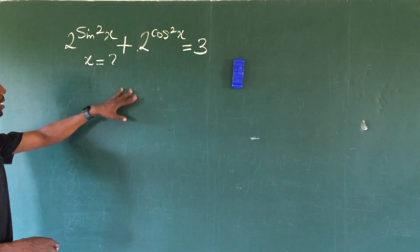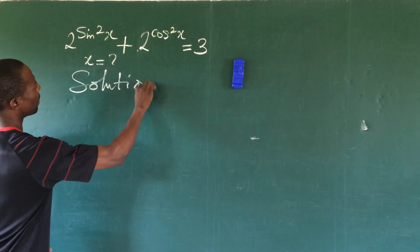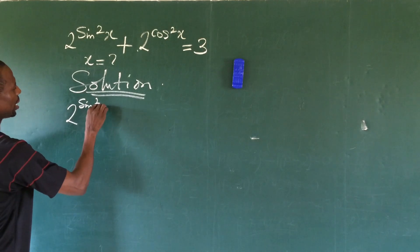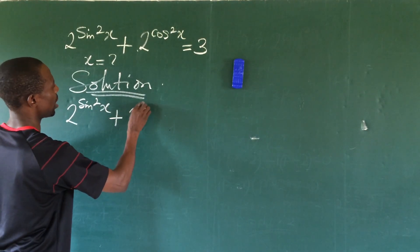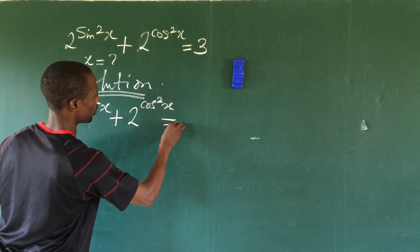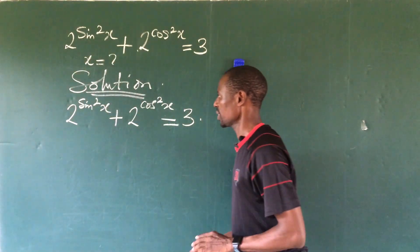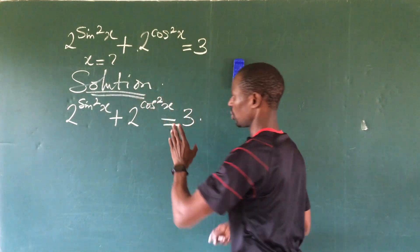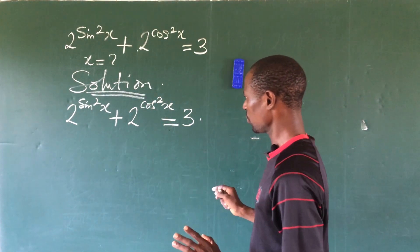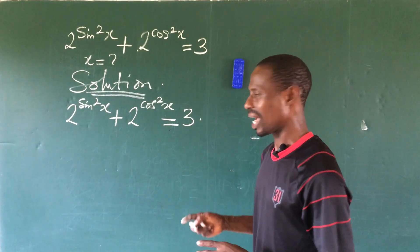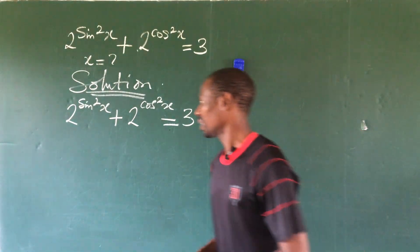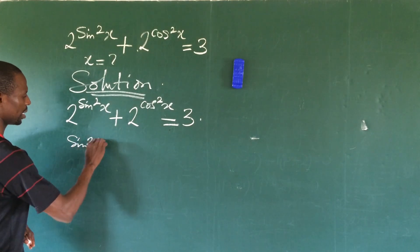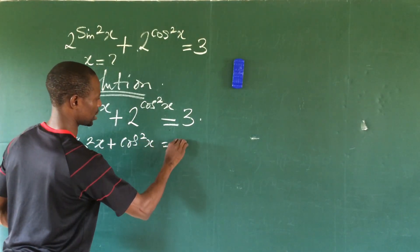So we put down our solution. Let's put down our question here. We have 2 to the power of sine squared x plus 2 to the power of cos squared x equal to 3. Now let's take a good look at this question. We are having sine squared x and cos squared x. Though the bases are the same, but since the exponents are different, the only thing we could do here is to think of bringing out some special trigonometrical identity. If you recall, we have our trigonometrical identity: sine squared x plus cos squared x equals 1.